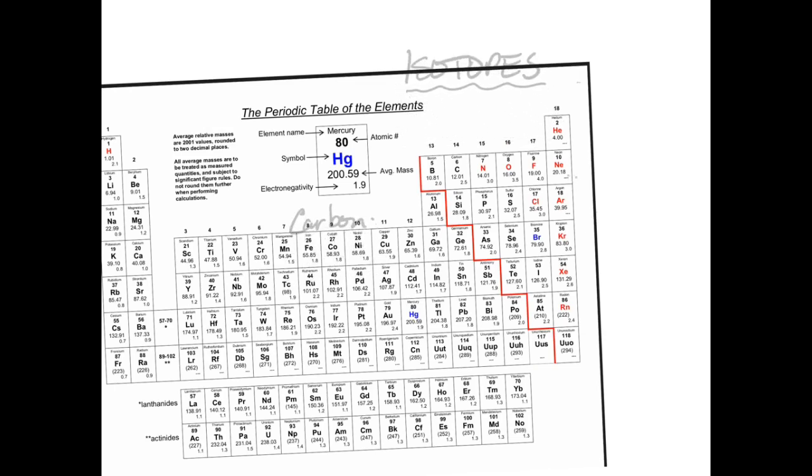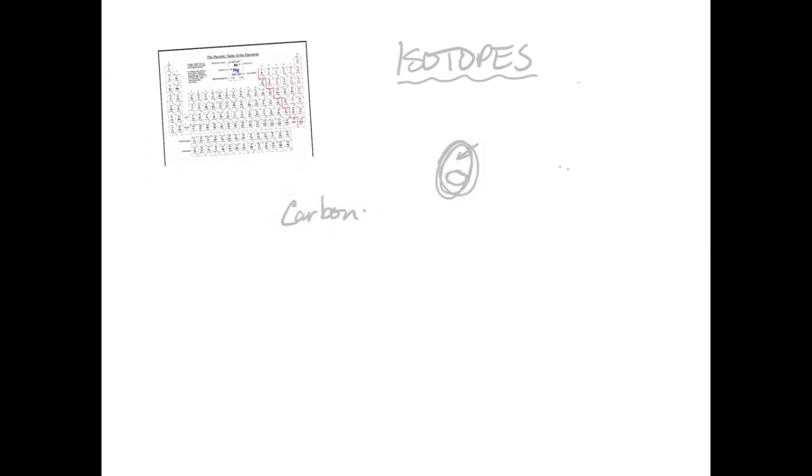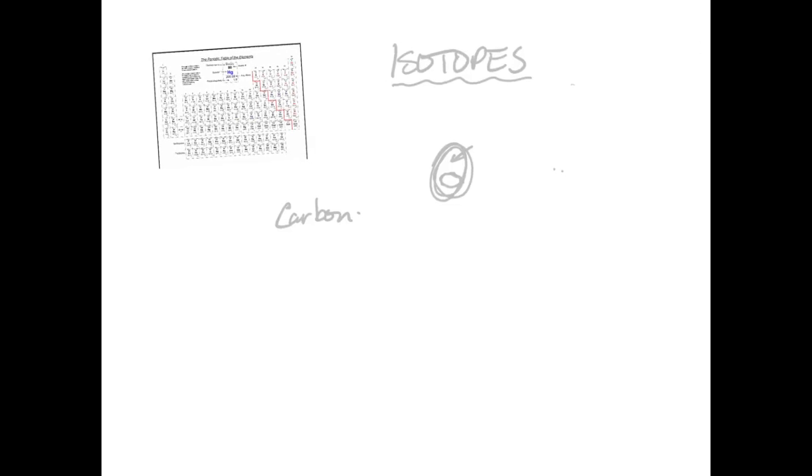Right up here, carbon's atomic number six, has six protons, and the average mass 12.01 means that the most common isotope of carbon has a mass of 12. So carbon-12, you write it like that. That 12 at the end indicates the mass of the carbon. Carbon-12 has six protons, and because it's got six protons, it's gonna have six electrons.